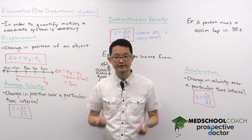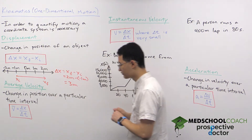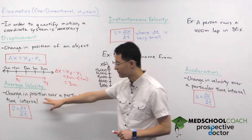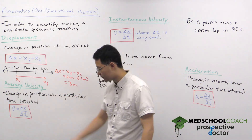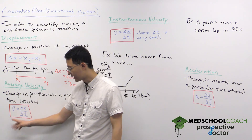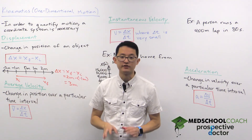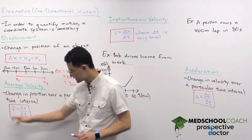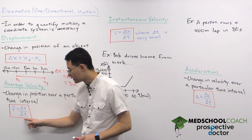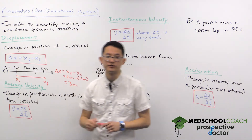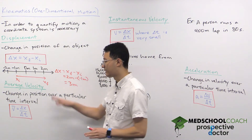Now let's take a look at another vector quantity: average velocity. Average velocity is defined as the change in position over a particular time interval. We have it in equation form where V with a horizontal line on top denotes average velocity, and it's equal to the displacement — the change in position — over the time interval over which the motion occurred. Notably for the MCAT, you need to know not only about average velocity but also instantaneous velocity.